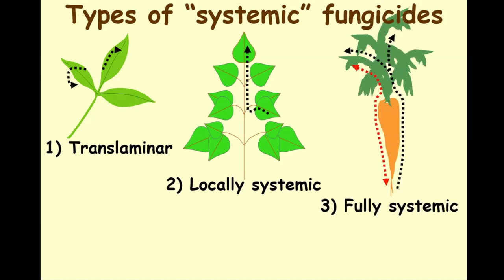Products that are fully systemic divide into two groups. The black arrow represents products that move in the xylem — if you apply them to the soil and the roots take them up, the plant will actually move those products throughout the entire plant all the way to the leaves. They're truly fully systemic but only in one direction. The products that move in both directions are indicated by a red arrow — they move in the phloem. Phloem is the vascular tissue the plant uses to translocate photosynthates, and phloem will move things in both directions. So phloem-translocated fungicides move both up and down.